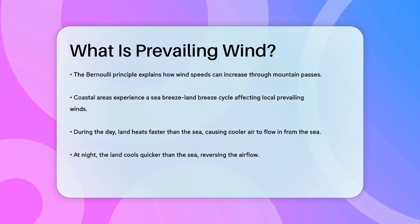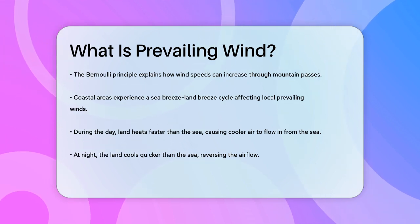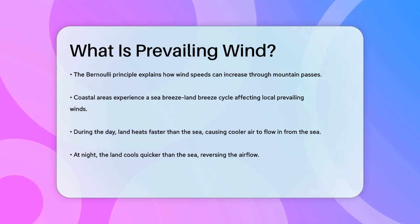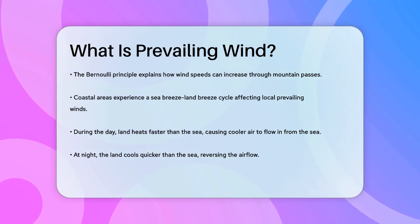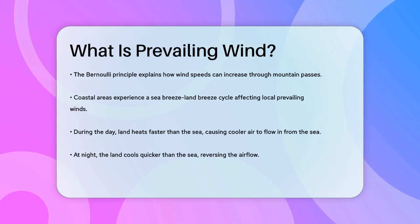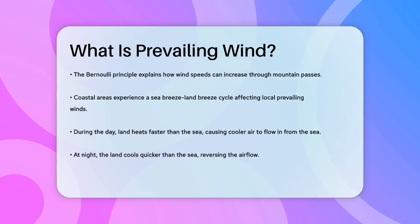In summary, prevailing winds are the result of a combination of global atmospheric patterns, the Coriolis effect, and local terrain features. Understanding these winds helps us predict weather patterns and appreciate the dynamic nature of our atmosphere.